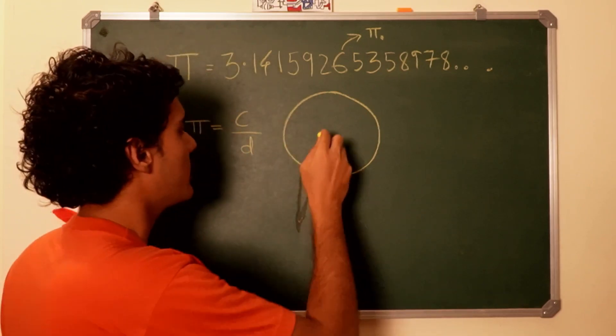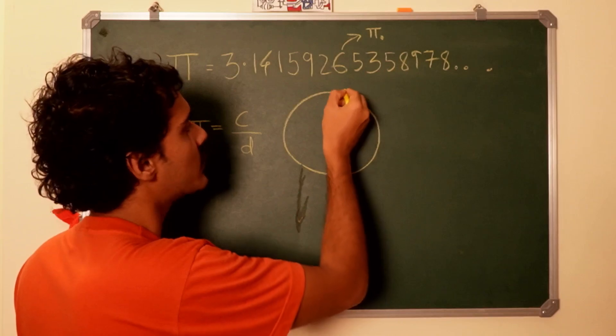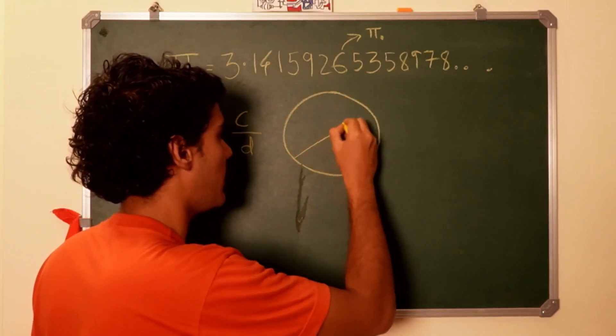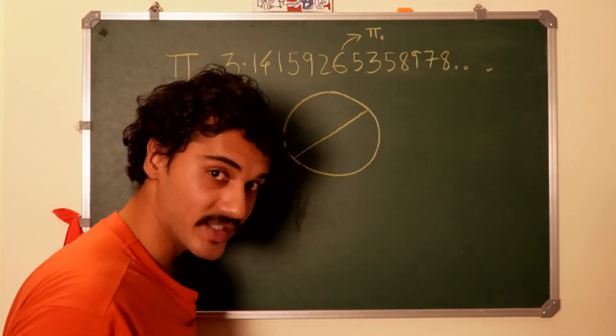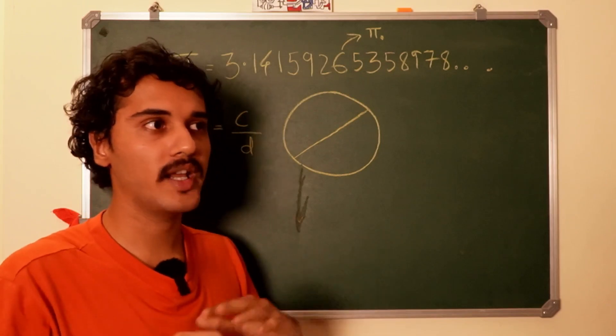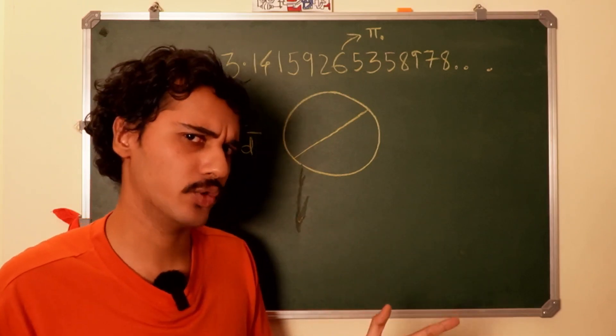What we would do is measure the circumference of this disc and measure the diameter of the disc, and then we would get the ratio. That ratio would equal pi for any disc that we can think of, as long as it's perfect.